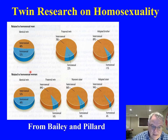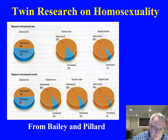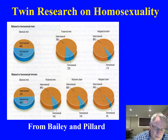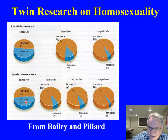Looking at lesbianism in females with the same concordance research: 48% of the time when one female has been found to be lesbian, the co-twin will be as well in identical twins. Fraternal twins show only a 16% concordance rate — a highly significant statistical difference. So in both gay males and females, it appears there is an underlying genetic cause. This is really important research.